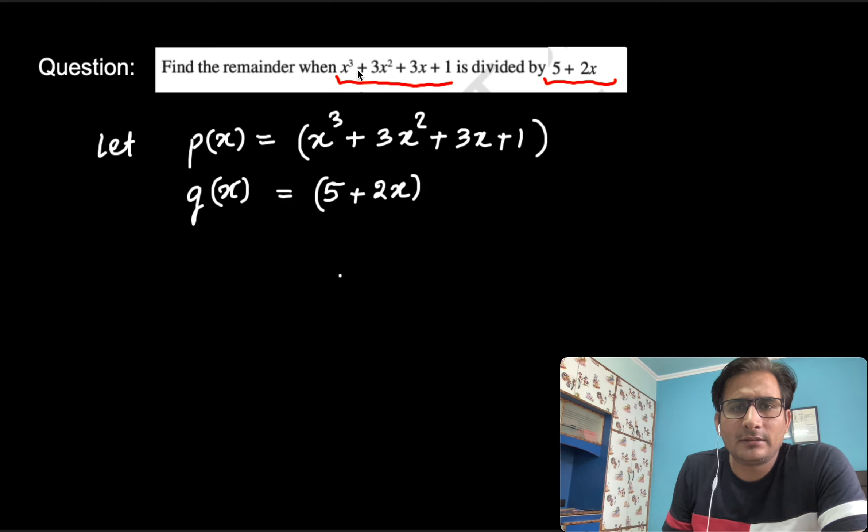Question: we need to find out the remainder. Suppose x cube plus 3x square plus 3x plus 1, I let it as polynomial p(x) and this is as polynomial g(x), 5 plus 2x.